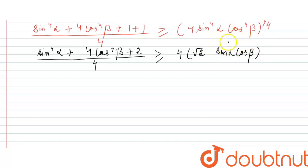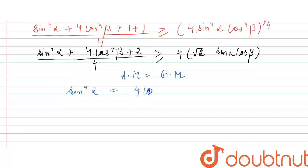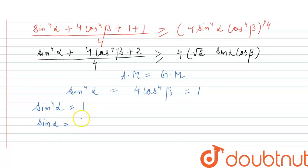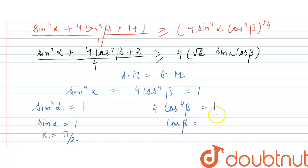From this, sin⁴(alpha) cancels out, showing that arithmetic mean equals geometric mean. Comparing terms, sin⁴(alpha) = 4cos⁴(beta). Comparing further: 4sin⁴(alpha) = 1, giving sin(alpha) = 1, so alpha = π/2. And 4cos⁴(beta) = 1, giving cos(beta) = 1/√2, so beta = π/4.